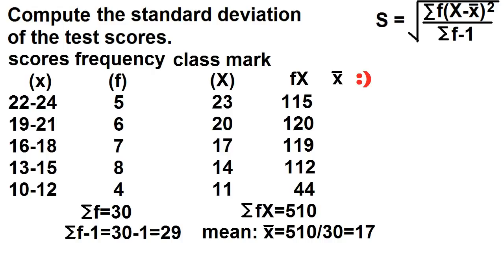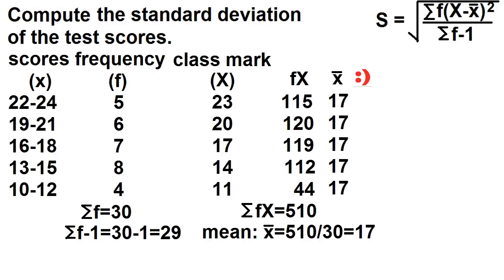Let's add another column for the mean. The mean is 17. This will help us in finding the difference of the class mark and the mean. Let's add another column for the deviation from the mean — just subtract the mean from the class mark.